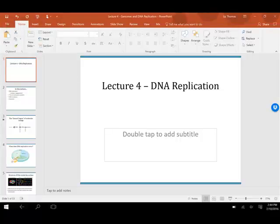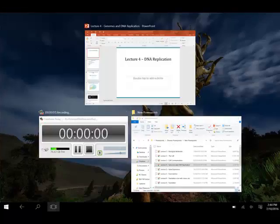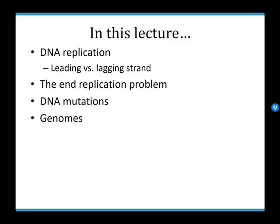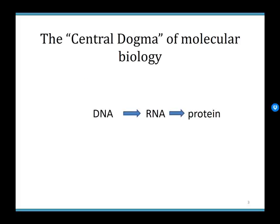In this lecture we're going to talk about DNA replication, including leading versus lagging strands, which is one of the ways we get around some of the weirdness that happens in DNA replication. We'll also talk about what happens when we get to the end of our DNA molecules — that's called the end replication problem — as well as mutations, how we repair them, and different types of genomes that cells have.